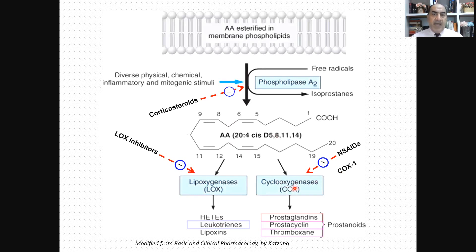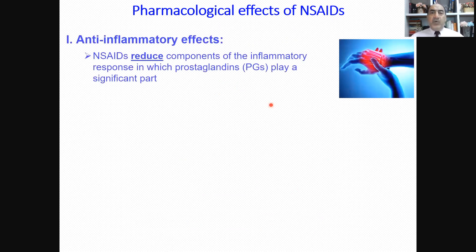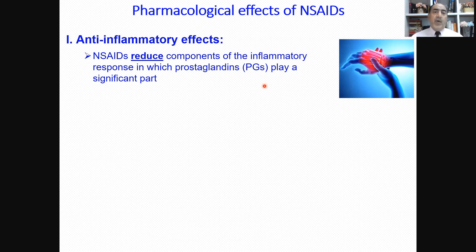COX itself has three isoenzymes: COX-1, COX-2, and COX-3 — we will talk about these later. Now, the pharmacological actions of these drugs: this class has three pharmacological actions — anti-inflammatory, analgesic, and antipyretic. Please remember these actions. All of them depend on the inhibition of prostaglandins.